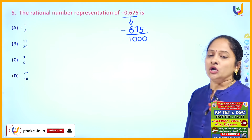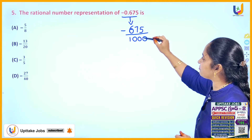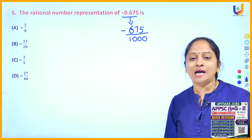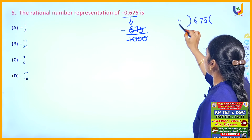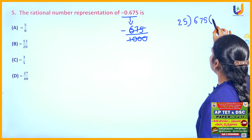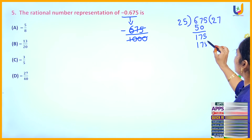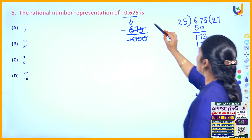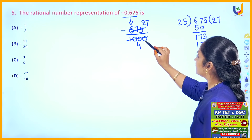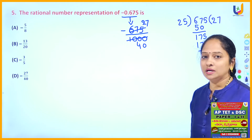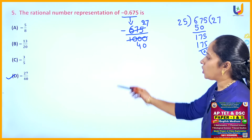Now represent the answer in simplest form. Both numbers end in 5, so try cancellation. Doing cancellation by 25: 25 twos are 50, remainder 175; 25 sevens are 175, remainder 0. So 675 gets cancelled to 27 times, and 25 forties are 1000. The final answer is minus 27 by 40 — that is option D.